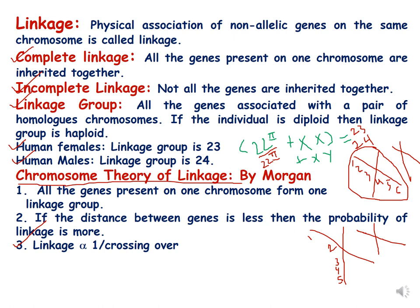Linkage is the physical association of non-allelic genes on the same chromosome. Linkage is of two types: complete linkage and incomplete linkage. Complete linkage is when all the genes present on one chromosome are inherited together, and incomplete linkage is when not all the genes are inherited together.